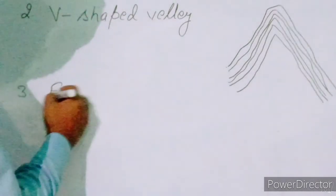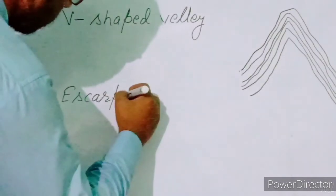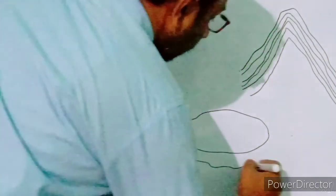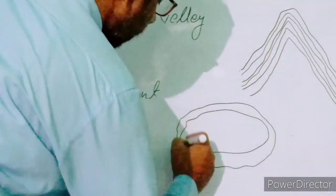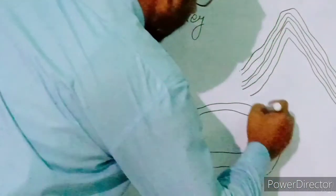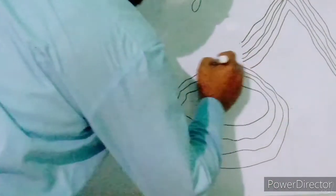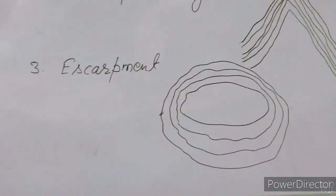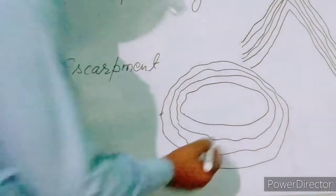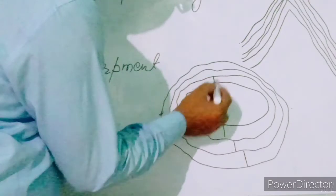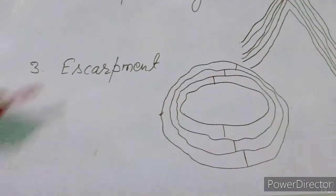Number three is escarpment. In an escarpment, on one side the lines of contours are drawn away from each other, but on the other side the contour lines are very close to each other. This pattern of contour lines — some drawn far apart and some very close together — represents the escarpment on the topo sheet.